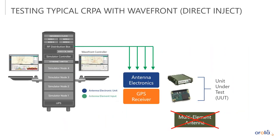When you're testing with a simulator that's not radiating — like a direct inject, or sometimes called a conducted test, where you physically connect the RF cables to the device under test — the antenna is not part of that test. I've crossed off the multi-element antenna; we just have the antenna electronics and the GPS receiver under test. The magic of a SERPA is in the antenna electronics, so this is still a very good test to test the SERPA's reaction to threats, but it's important to note that the antenna itself is not part of this test.